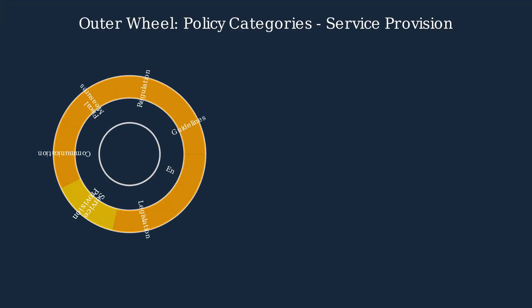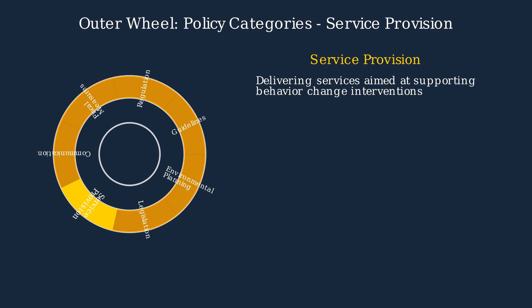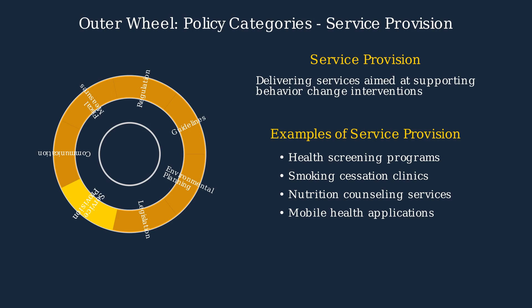Service provision is a key policy category in the outer wheel of the behavior change wheel framework. It focuses on delivering services that support behavior change interventions. Service provision involves establishing or funding services that directly facilitate behavior change, delivered through various channels including healthcare systems, community organizations, and digital platforms. Examples include health screening programs, smoking cessation clinics, nutrition counseling services, and mobile health applications that support users in adopting healthier behaviors.